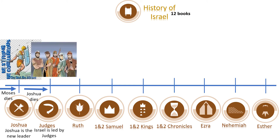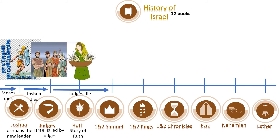God appoints different judges like Samson, Deborah, and Gideon to lead the Israelites. The book of Ruth was written around the same time and that is why it is placed between these books. It tells the story of Ruth and how she remained faithful to God. She was rewarded by being made the great-grandmother of King David and placed in Christ's lineage. However, in the meanwhile, the judges die too.